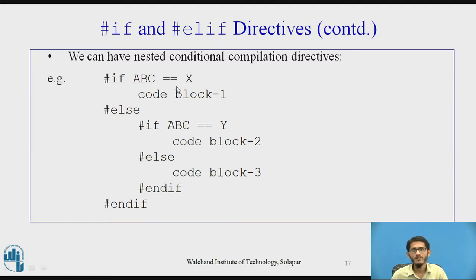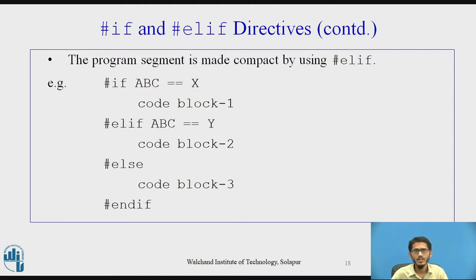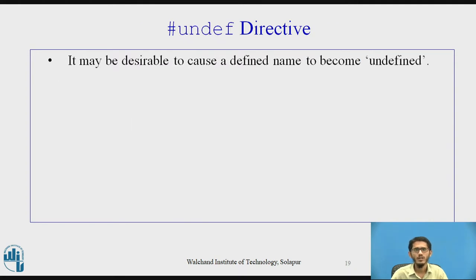We can also have nested conditional compilation directives. For example: #if abc == x compiles code block 1; #else contains another #if checking abc == y to compile code block 2, otherwise code block 3. This requires two #endifs. Using #elif simplifies this: #if abc == x compiles code block 1, #elif abc == y compiles code block 2, #else compiles code block 3, and only one #endif is needed.